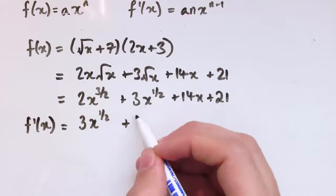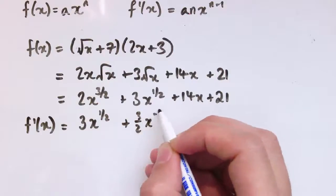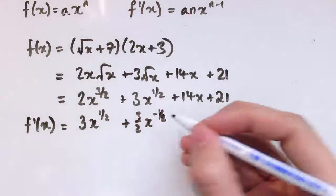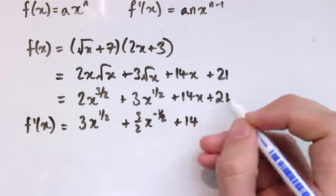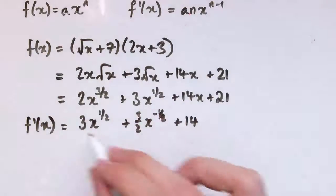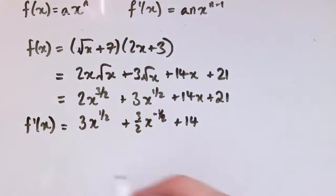So 3 over 2 times 2, that gives us 3 times x to the 1/2. Then I get 3 times 1/2 is 3 over 2, x to the minus 1/2. Then we have plus 14 here, and the 21 differentiates to give 0.